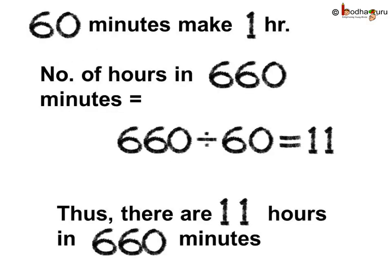Let us see again how we solve this problem. 60 minutes make 1 hour, and the number of hours in 660 minutes is equal to 660 divided by 60, which is equal to 11. Thus, there are 11 hours in 660 minutes.